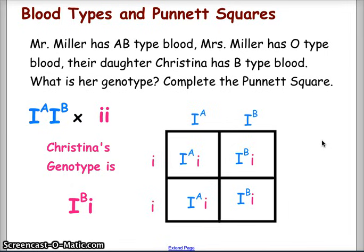Could Mr. and Mrs. Miller have an O type child? Since none of the offspring possibilities from this Punnett square are i i — and because Mr. Miller cannot contribute a lowercase i — there is no possibility of an O type child from this marriage. That concludes Punnett squares and blood types; we will continue with blood types and Punnett squares when we look at pedigrees.